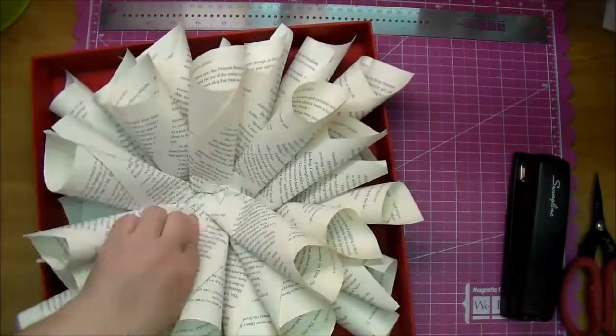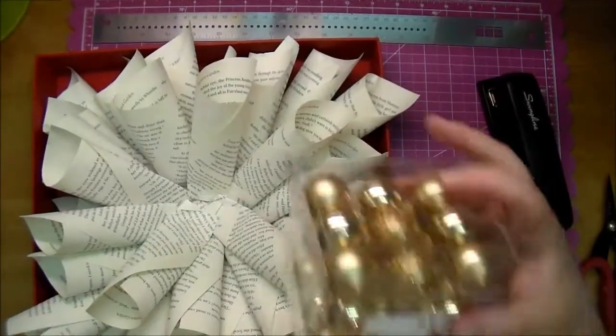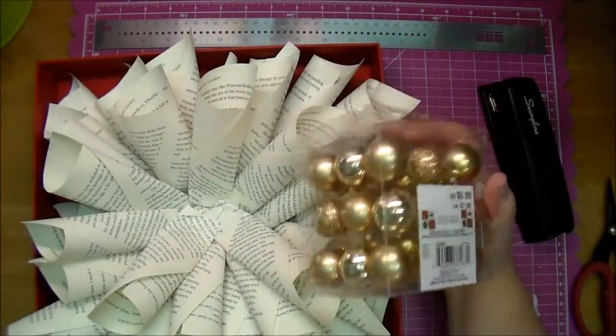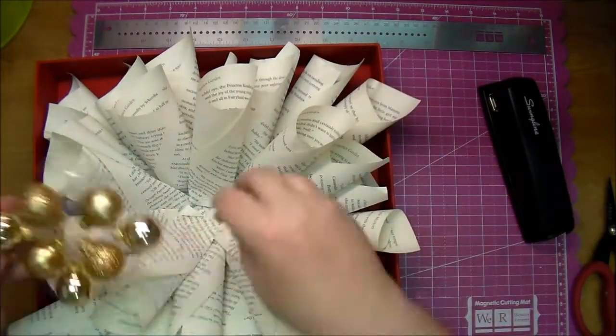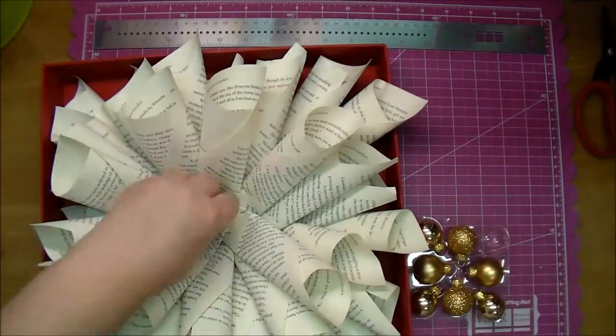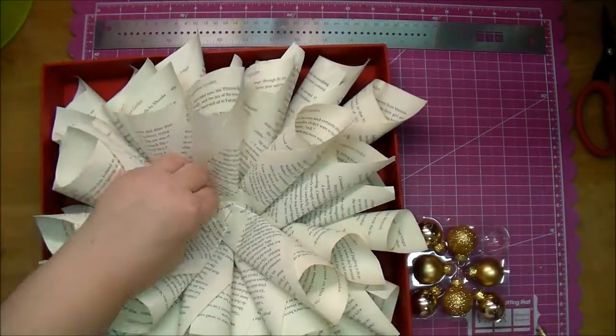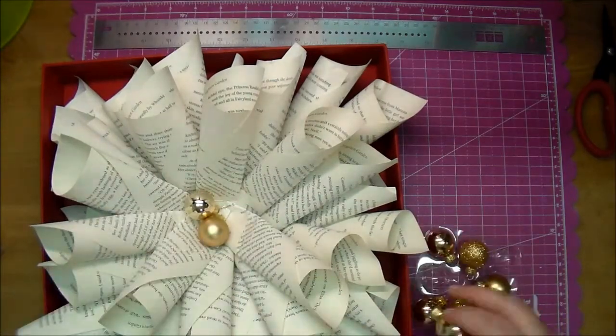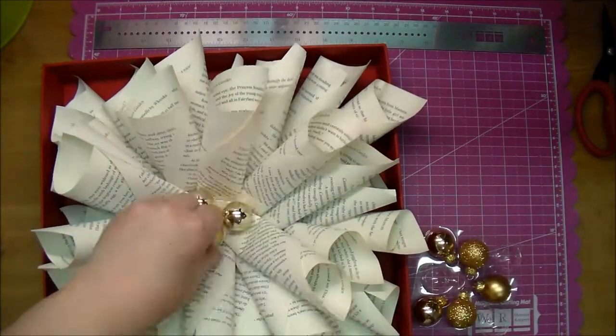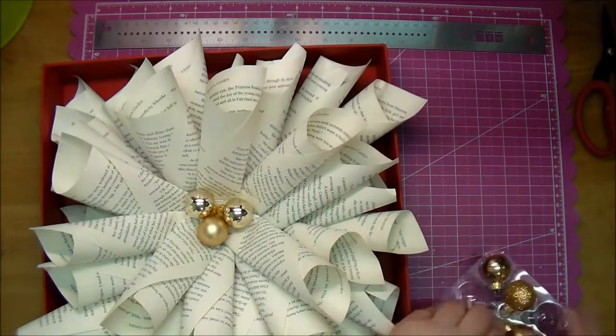So once I'm happy with the fullness of it, I just keep lifting it up and checking it. Then I'm going to add something to the center. I wanted to add a touch of gold, so I'm using these tiny ornaments that I got from Michaels. I've seen them at Walmart or any of your other craft stores. I love the gold with the red and those book pages, so I wanted to add those in.